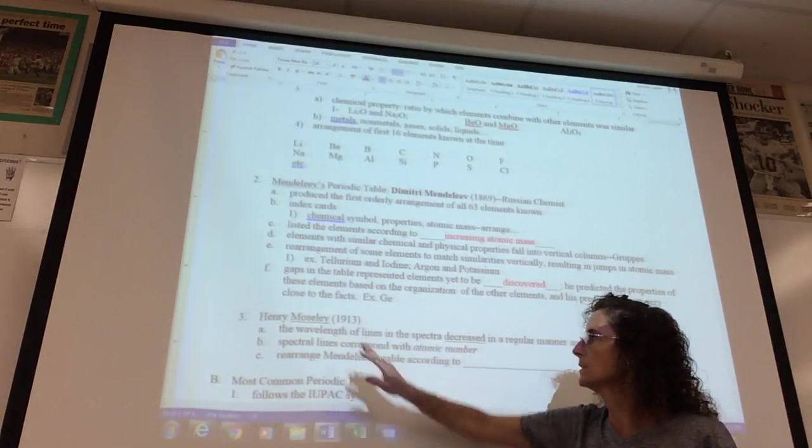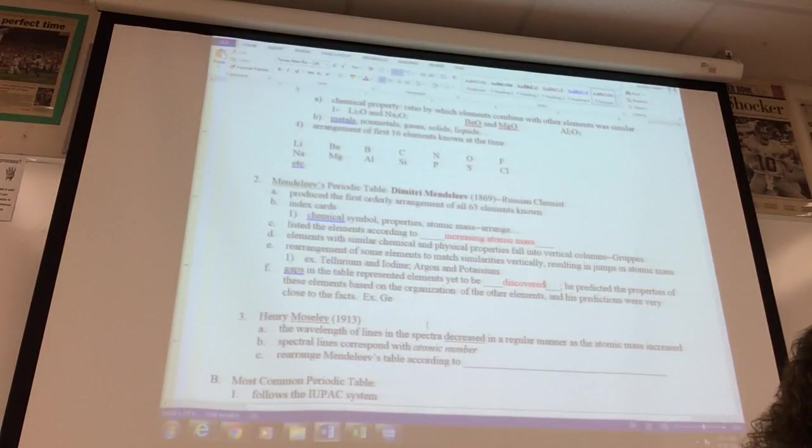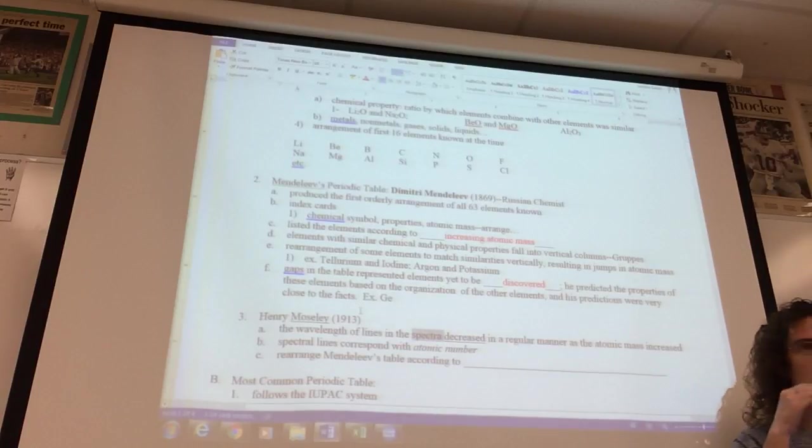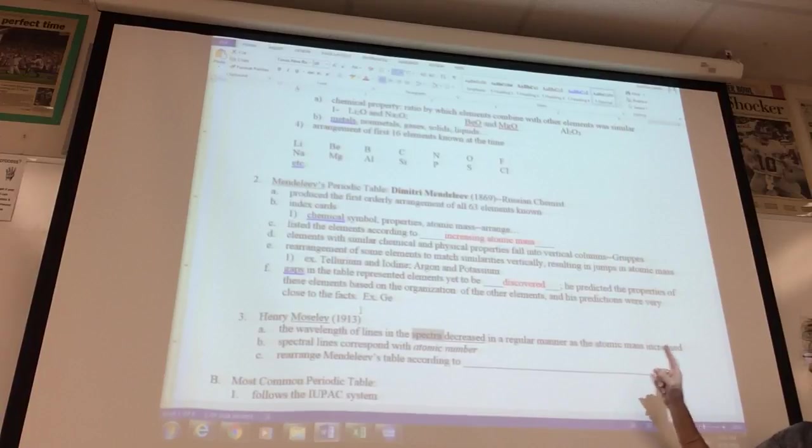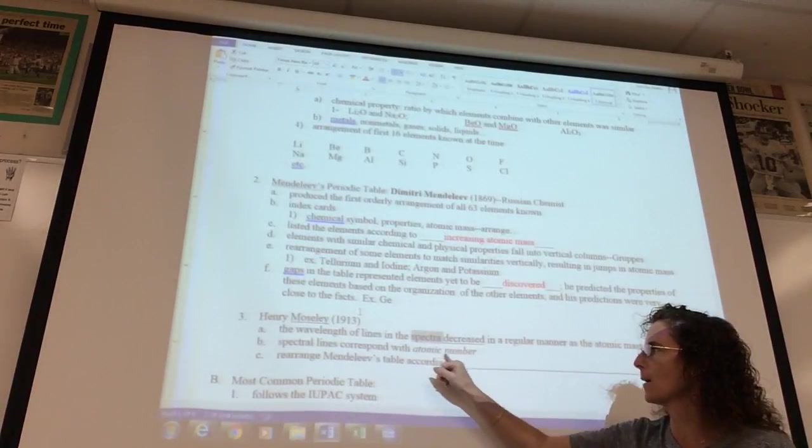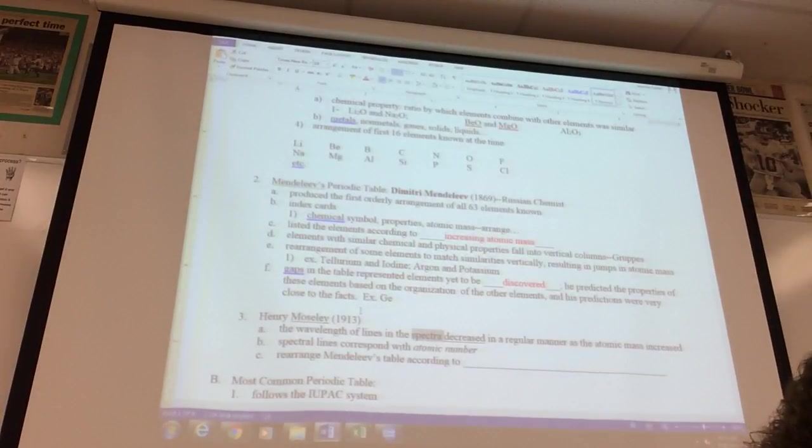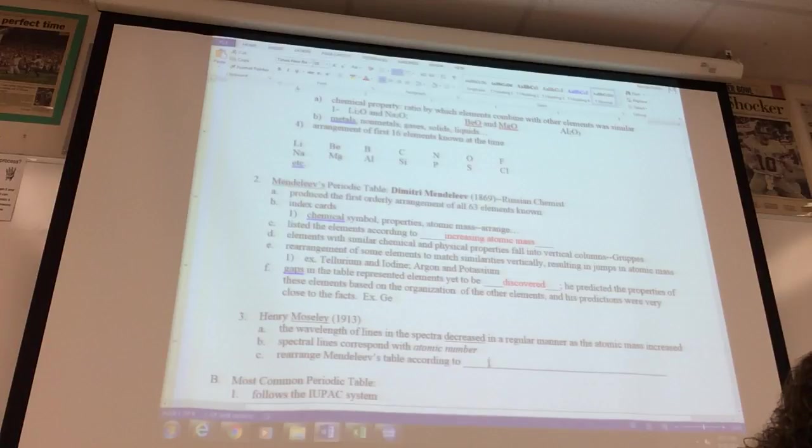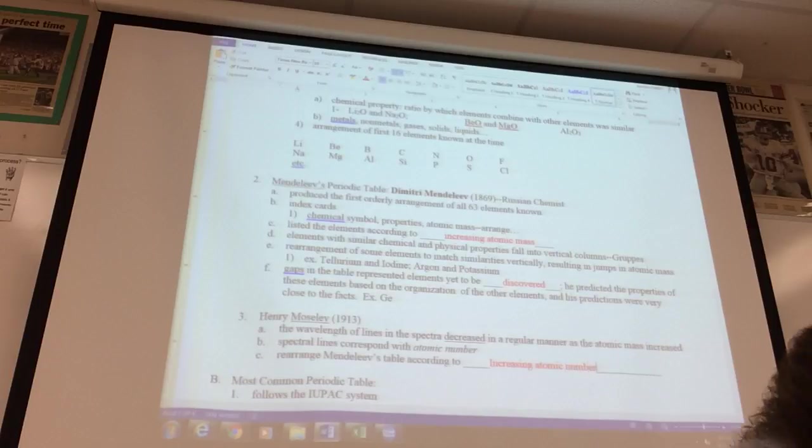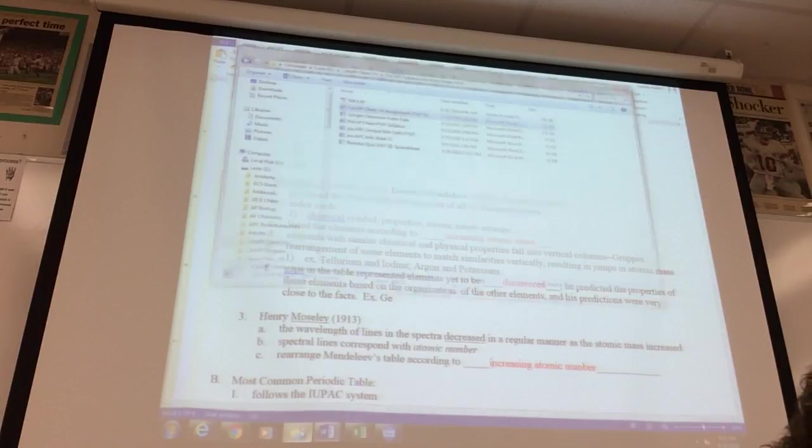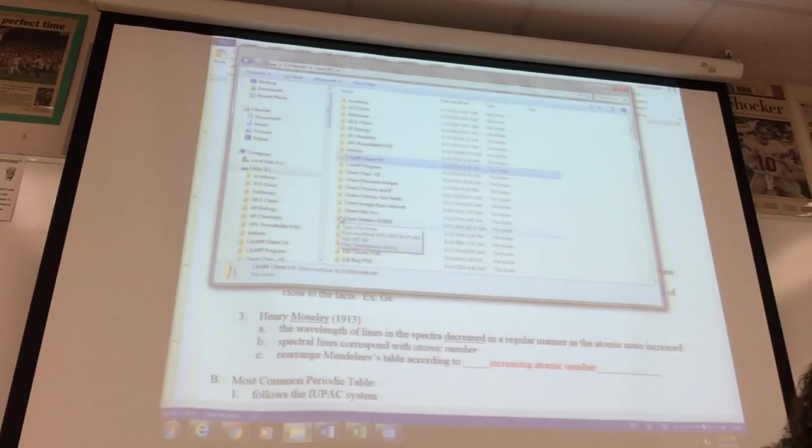A little later on, Moseley showed that with those spectra that we looked at, in terms of the line emission spectrum, the wavelength decreased as the atomic mass increased. And he felt that the spectral lines were not based on atomic mass, but rather atomic number. What you do need to know is that Moseley changed the concept of increasing atomic mass to be increasing atomic number, which is how the periodic table is arranged today. And I've got a short video on Mendeleev's findings, and we'll take a look at that here.